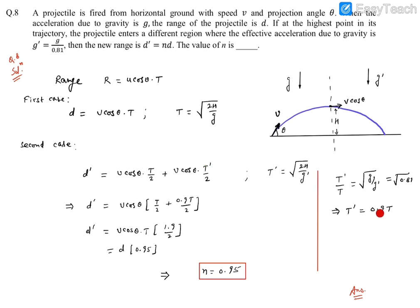Now, this t prime value can be substituted from here. So it will be d prime equals v cos theta as a common, that's t by 2 plus t prime by 2, that's t prime could be written as 0.90, and that by 2. After simplification, we can take this t as a common, so it becomes v cos theta into t, and this will be 1 plus 0.9, that is 1.9 by 2.